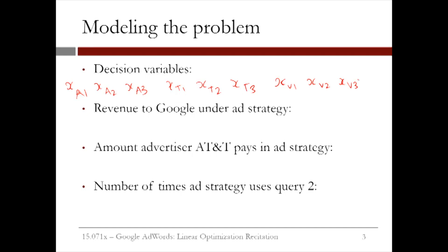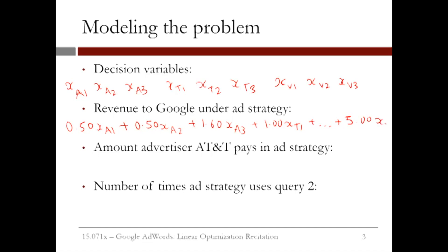Now, how do we compute the revenue to Google, which is our objective? Well, we know the average price per display, and our decision variables tell us exactly how many times we will display each ad for each query. So all we need to do is multiply each decision variable with its corresponding average price per display and add them all up. If we did this, we would have 0.5 XA1 plus 0.5 XA2 plus 1.6 XA3 plus 1 XT1, and we can continue this, with the last term in our sum being 5 times XV3.